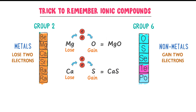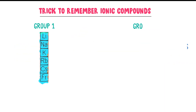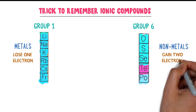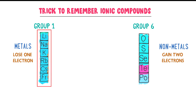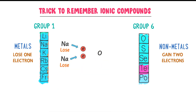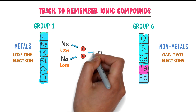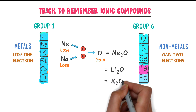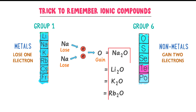Now let me teach you the third type of ionic compounds. Consider group 1 elements and group 6 elements. Group 1 elements lose 1 electron and group 6 elements gain 2 electrons. For instance, sodium from metals and oxygen from non-metals — one sodium atom loses 1 electron and another sodium atom loses another electron. Oxygen gains these 2 electrons, so 2 sodium atoms combine with 1 oxygen atom to give sodium oxide. Similarly, we get lithium oxide, potassium oxide, and rubidium oxide — all of which are ionic compounds.